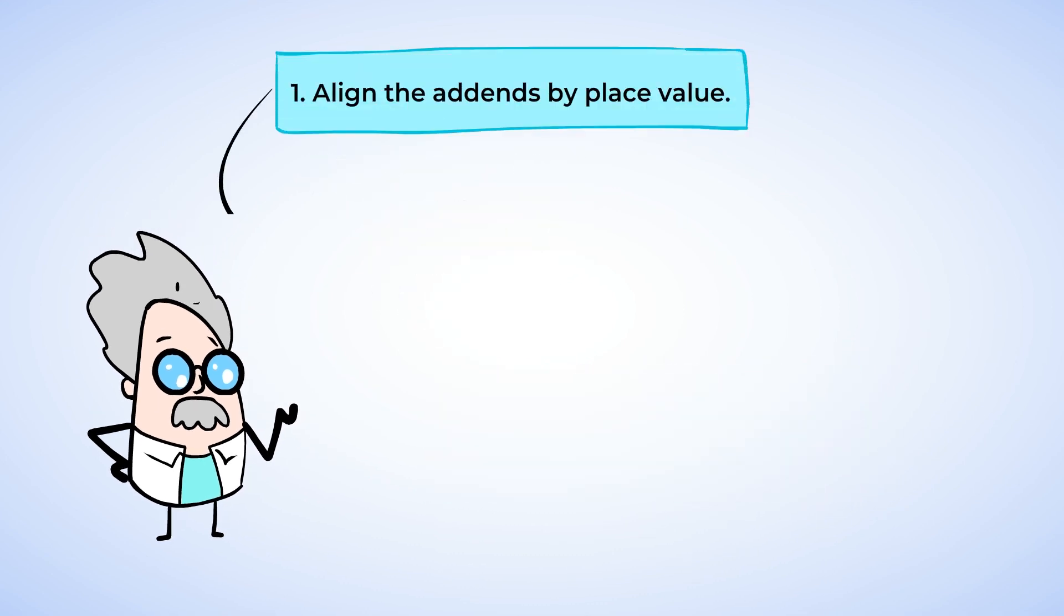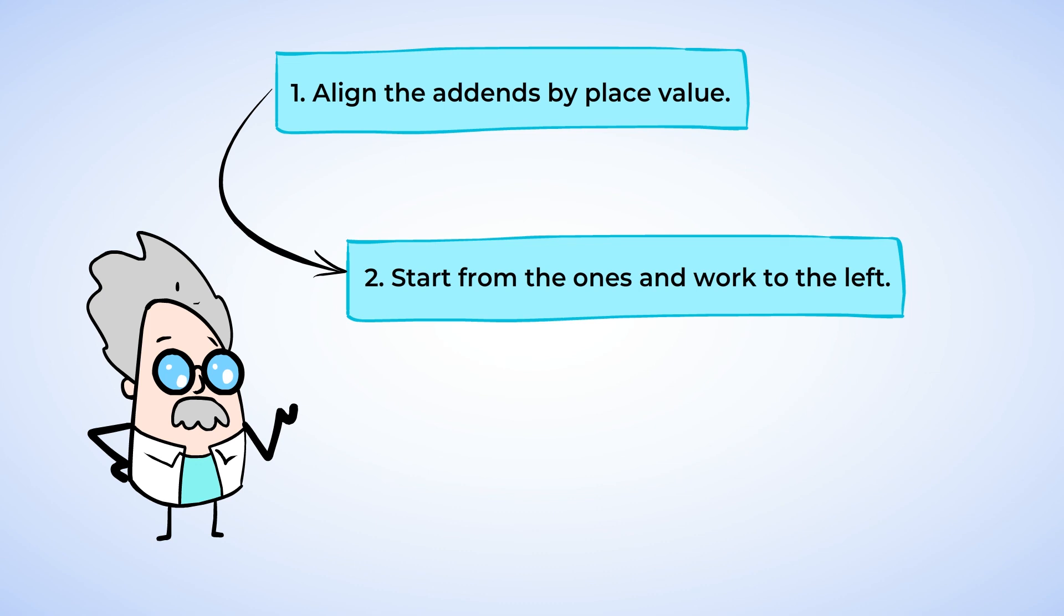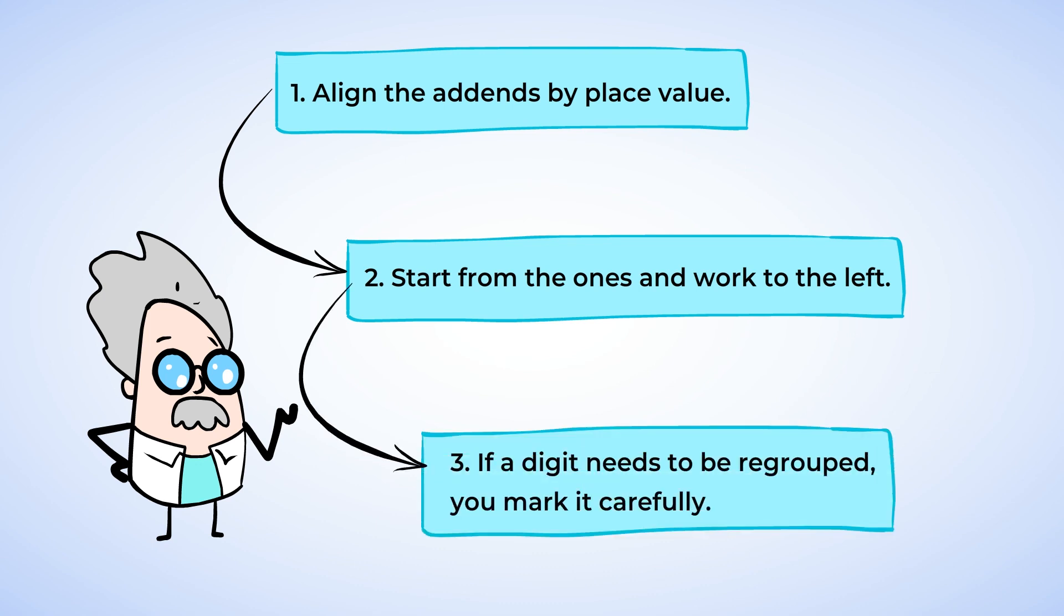First you align the addends by place value. Then you start from the ones and work to the left. If a digit needs to be regrouped, you mark it carefully. Now let's practice together with a few more problems in the next lesson.